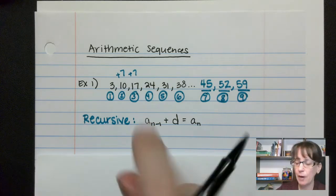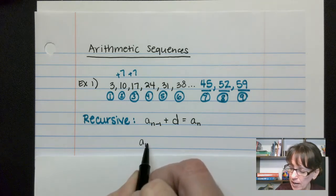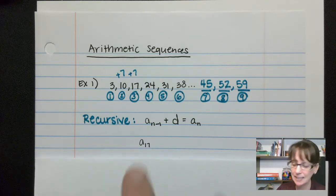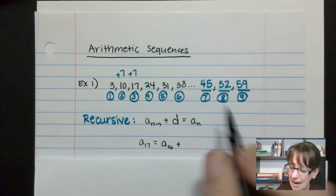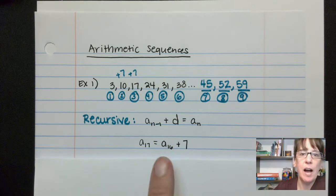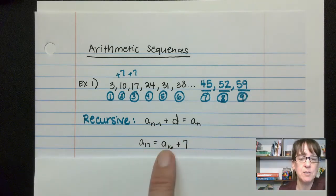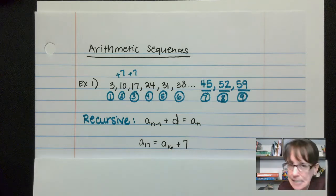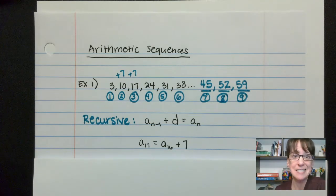So in this case, if I wanted to figure out what happens in position 17, I would have to take whatever happens in position 16 and add my common difference of 7. Now, I would need to go all the way up to 16 in order to use this to figure that out, and I am lazy. I don't want to have to work harder than I absolutely have to. So recursive sequences, they have their place, but they're not as nice as explicit sequences.